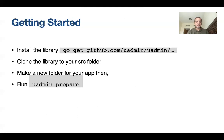Getting started: to install the library it's just a standard command like installing any Golang library. You run `go get github.com/uadmin/uadmin/...`. The `...` part is really important because it installs the CLI tools. The second important step, because of the new module system, is to clone the library into your SRC folder: `git clone https://github.com/uadmin/uadmin` into your SRC folder.